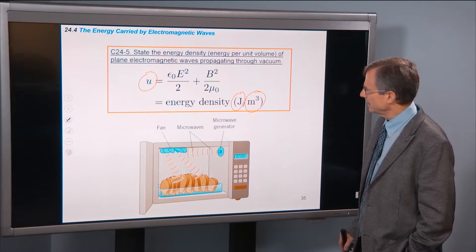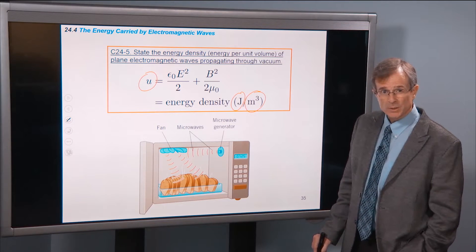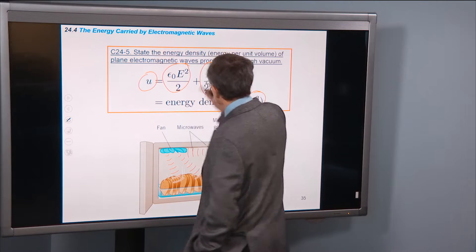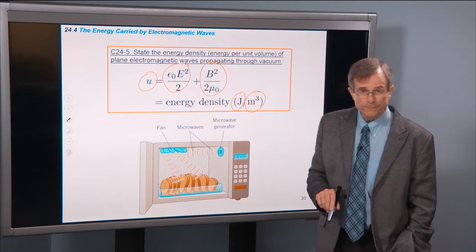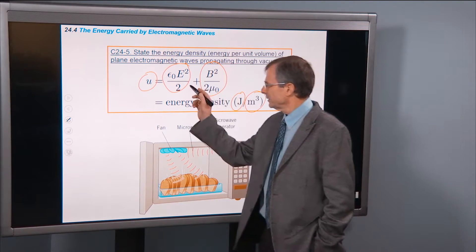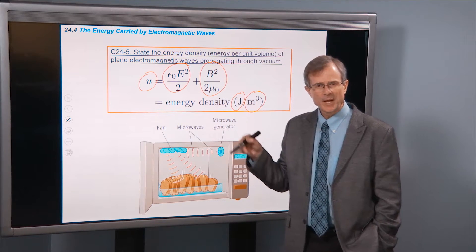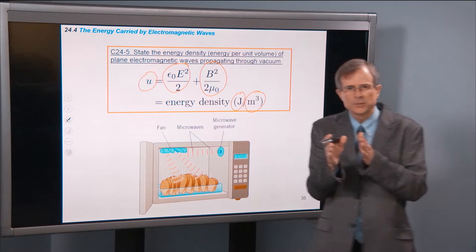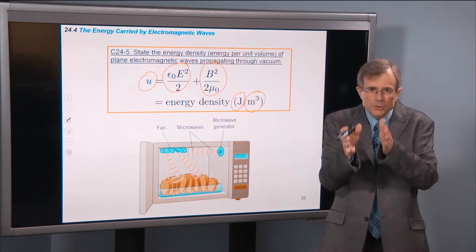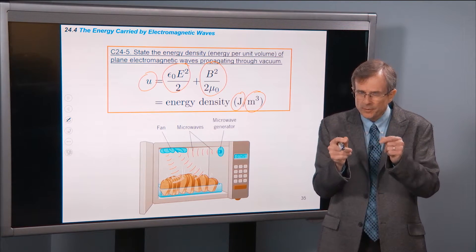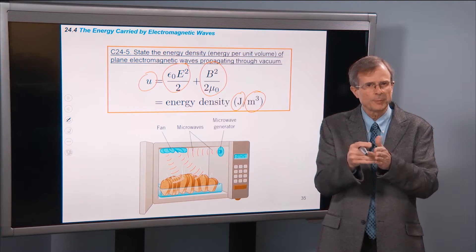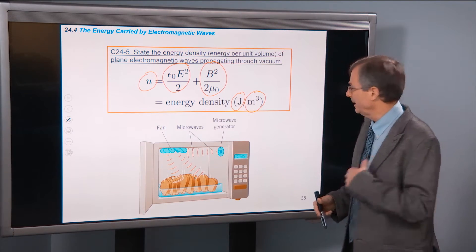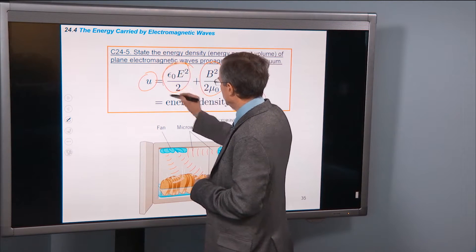And that has two components, an electric component and a magnetic component. We have actually talked about these before. We talked about the electric component when we talked about capacitors. You can either think of the energy of a capacitor being stored in the charge on the plates, or as being stored in the electric field between the plates. We're thinking about it in that latter way now. Energy is stored in these electric fields.